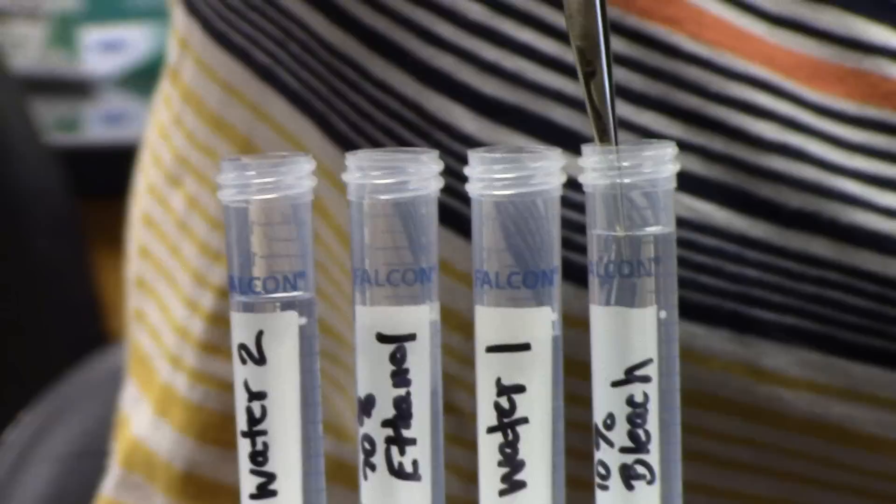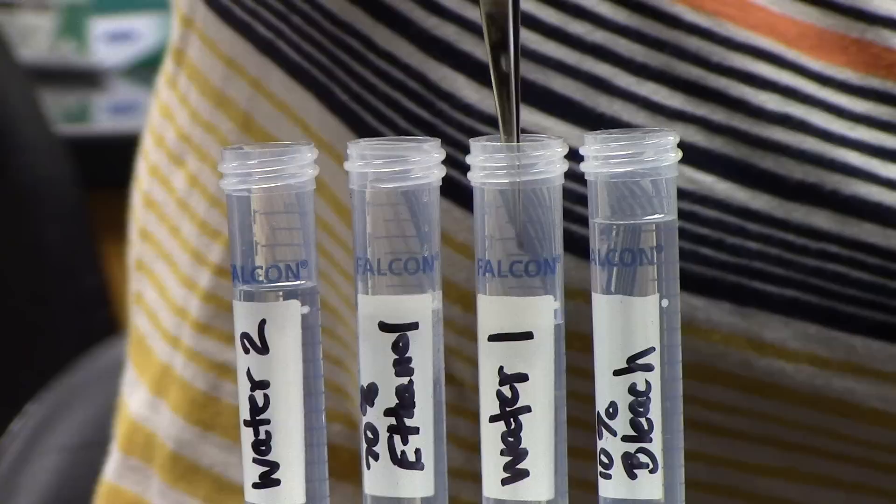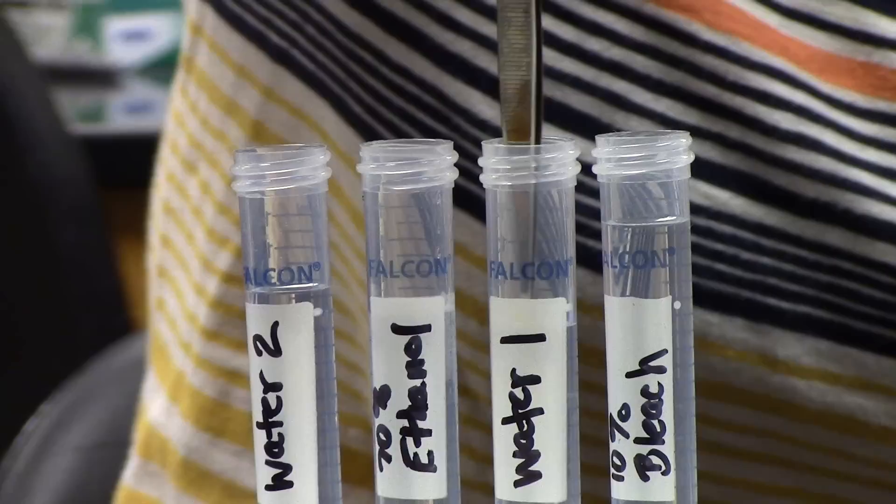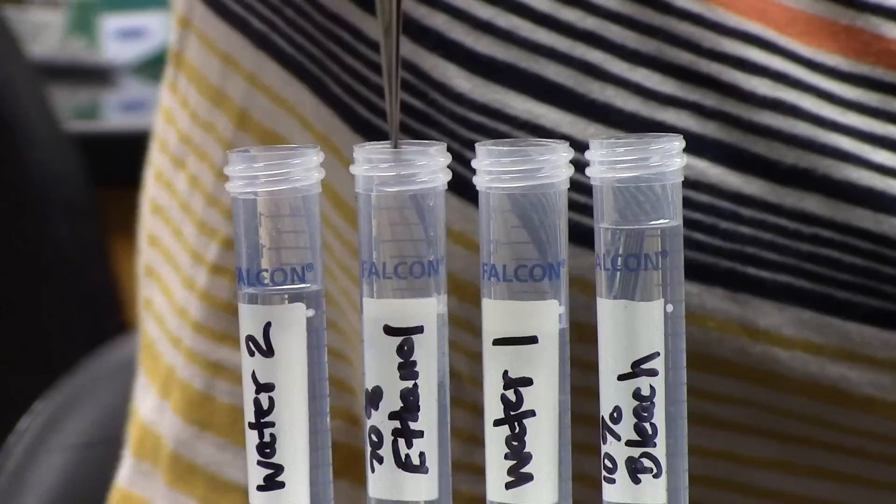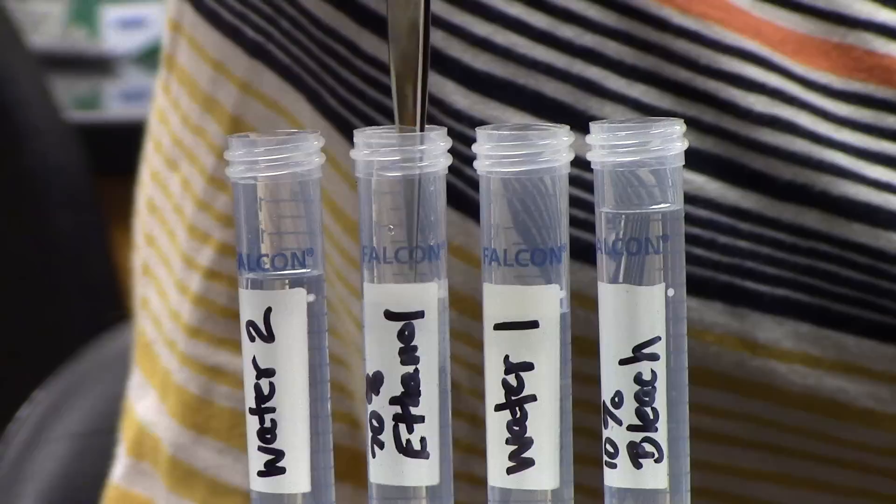Give it a little swirl to make sure that the entire thing is coated. Now move into the water to clean off the bleach for 10 seconds. Then ethanol for 5. And then water again for 10 seconds.